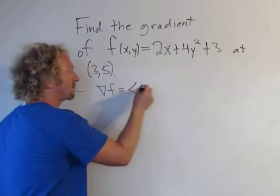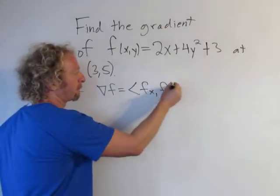So this is going to be f sub x comma f sub y. That's going to be the gradient.